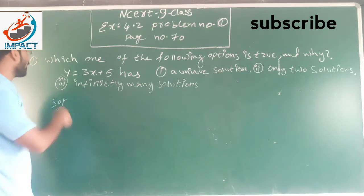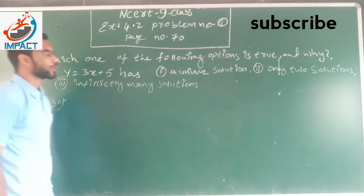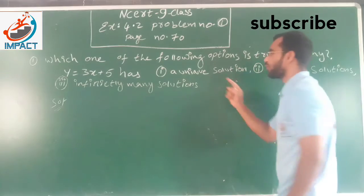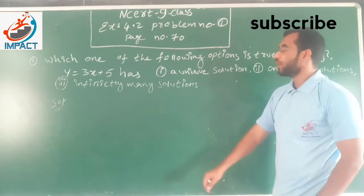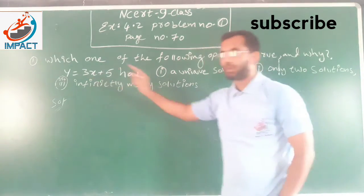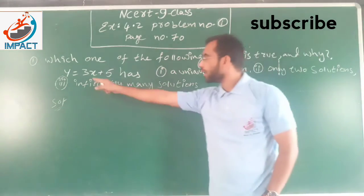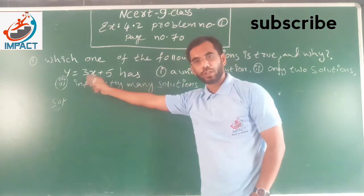The question is asking us to find which of the following option is true and why. y equals 3x plus 5. It is given equation that is y equals 3x plus 5.